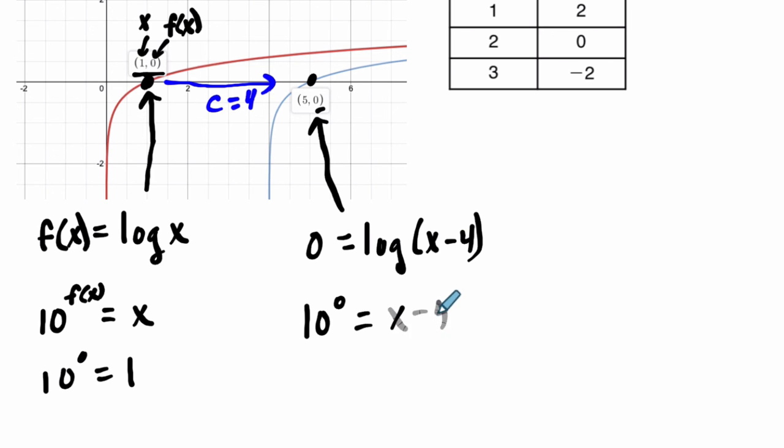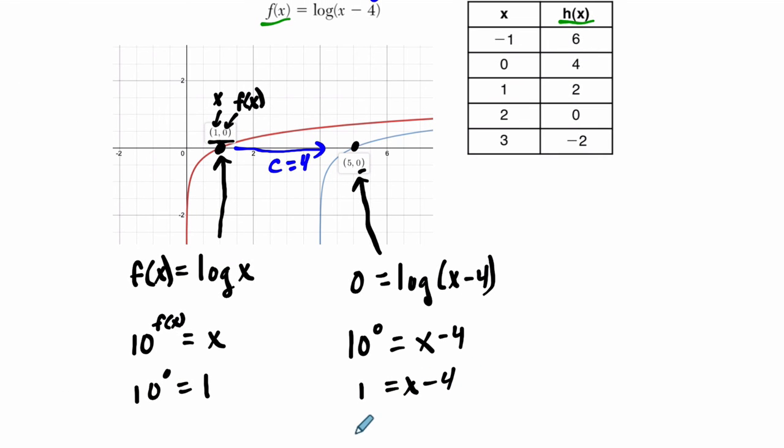Now, 10 to the 0 is just 1. So this is when 1 equals x minus 4, and we add 4 to both sides, and x equals 5. So you can solve it algebraically, and that's supported by the transformations here.